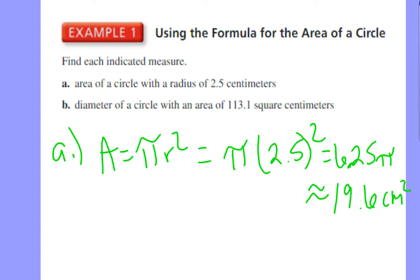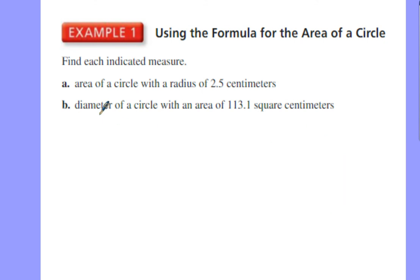Well, what about utilizing this concept to find a different part of the circle, like the diameter of the circle? Well, let's think about this. For part B, I know that area equals pi r squared. Well, what do I know about the diameter? Well, the diameter is equal to 2 times the radius. So if I can find the radius, I can then go ahead and find diameter.